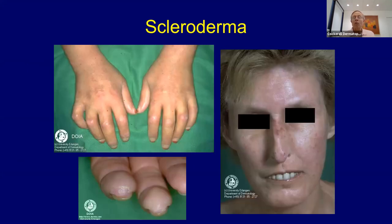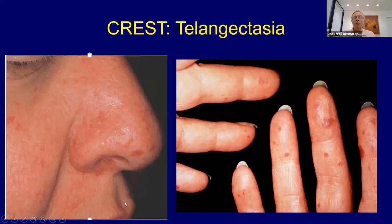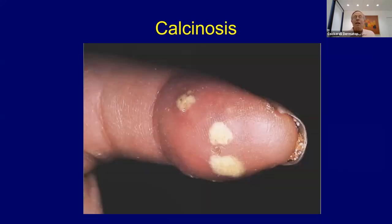Here are some clinical photos: acrosclerosis, the pinched facies, this lady probably has CREST with telangiectasia. Then the inverse pterygium of the fingers — they lose the substance under their fingernails. That's a pretty classic manifestation of acrosclerosis. These are the mat-like telangiectasia you see with CREST, and the calcinosis that you see with CREST. You can also notice she has pterygium unguis inversus here as well.